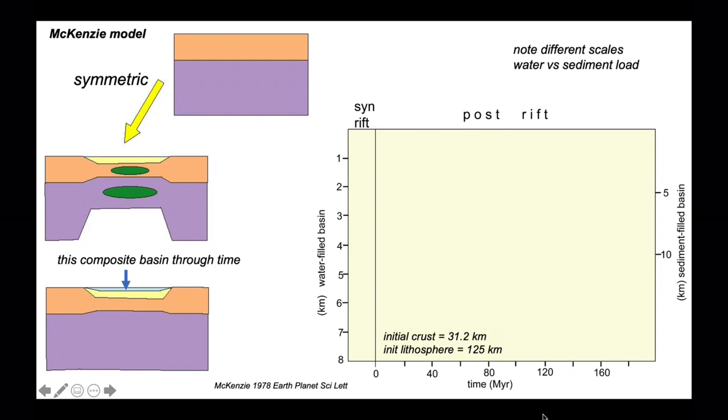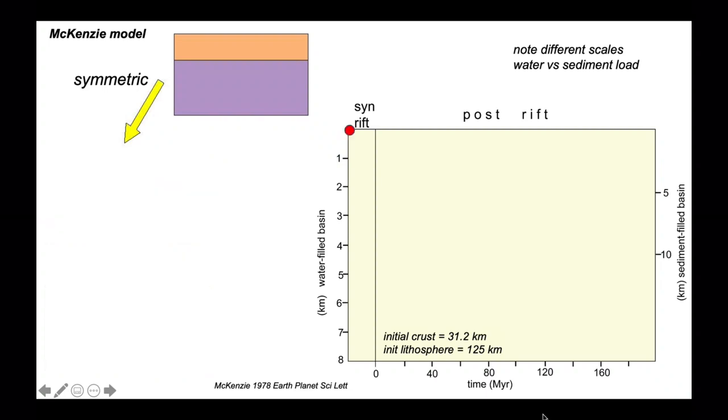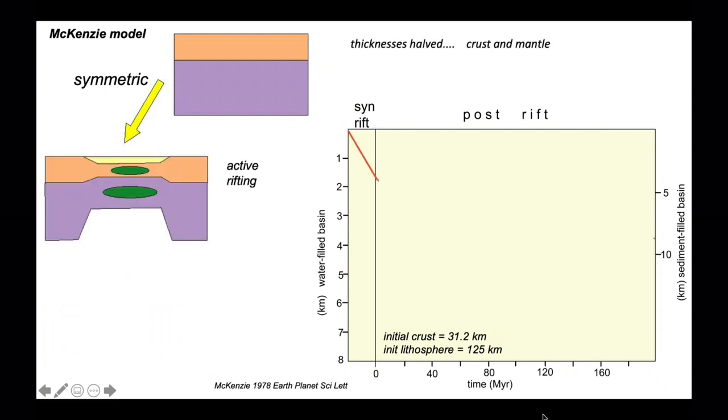Let's plot this rifting history with a beta factor of 2. We start with the syn-rift stage about to develop. Here's the rifting stage where we've thinned the crust and mantle lithosphere equally by a factor of 2, driving subsidence. This rifting is taken arbitrarily as 20 million years.